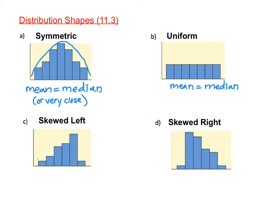A graph is skewed left if it's flat on the left side and it gets higher on the right side. Remember that the name for the skew is the direction of the tail. Here, the tail or flat part of the graph is on the left, so this graph is called skewed left. Whenever a graph is skewed left, the mean is going to be pulled toward the tail, so our mean is going to get smaller and the mean will always be less than the median for any graph that is skewed left.